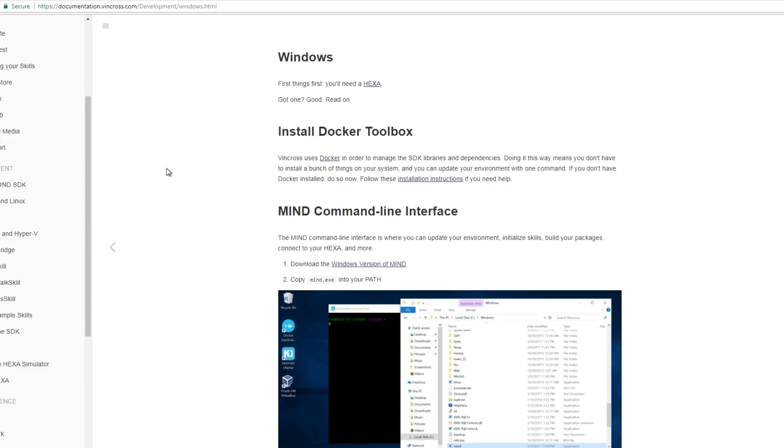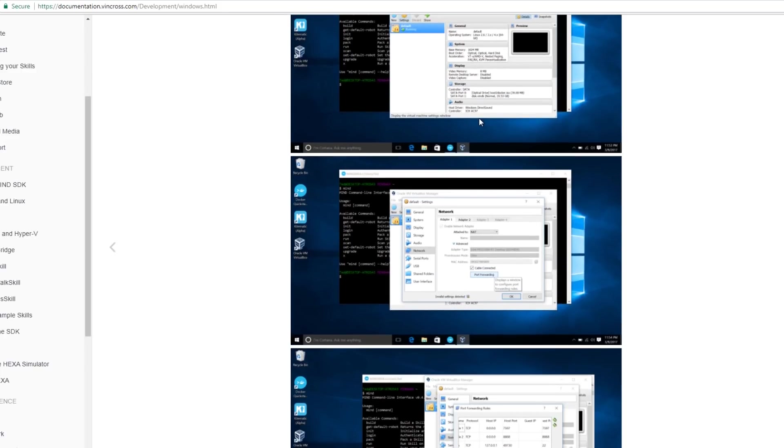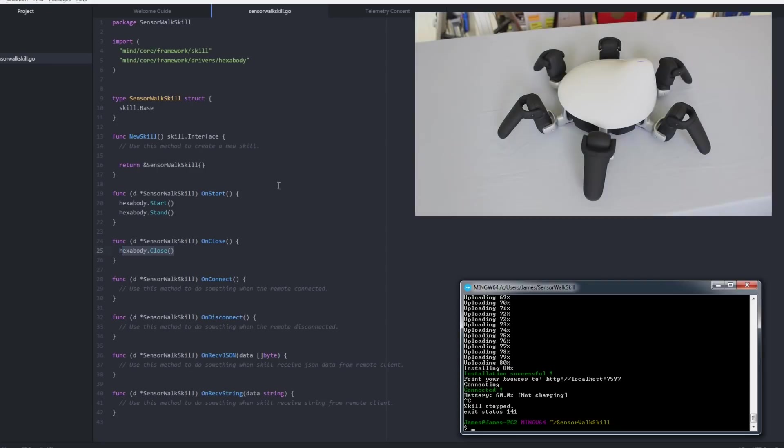So I'm doing development under Windows, and there's some quite good documentation on documentation.vincross.com about exactly what you need to do. For Windows, you need to install Docker, and you need to install Oracle VirtualBox. You can develop under Mac OS X, and of course Linux as well. And the documentation here takes you through step-by-step what to install and what to do. So the first thing you get is basically making a blank skill. I'm moving on a little bit to the sensor walk skill, which will read the sensor and make the robot walk. But first of all, I've just taken the very basic lines of code to show you the basic functionality.